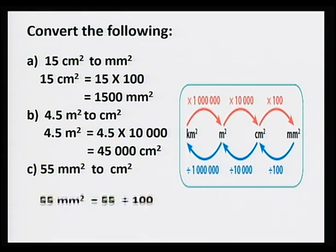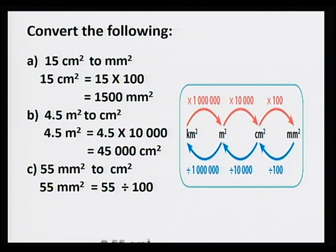If we now have to convert 55 millimeters squared to centimeters squared, we divide by 100. So the answer is 0.55 centimeters squared.